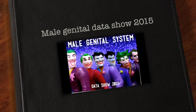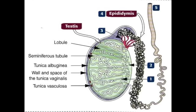Bismillah ar-Rahman ar-Rahim. This is a description of the male genital system data show. This is a diagram demonstrating the testis structure. At the outermost part, we have this pouch called tunica vaginalis. It is formed of a visceral layer applied over the tunica albuginea and a parietal layer. In between, we have a thin space filled with serous fluid to act as a lubricant, allowing the free movement of the testis.